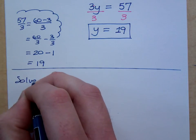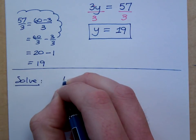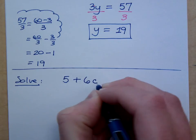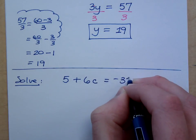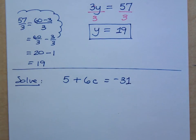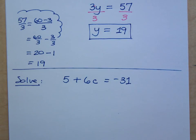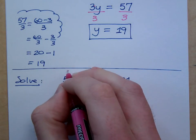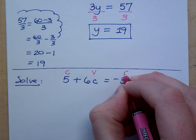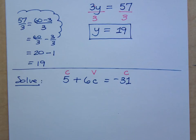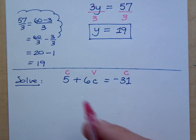How about 5 plus 6c equals negative 31. Now here, this is a constant term, this is a variable, this is a constant. Again, I only have one variable term, right? So since he's the only variable term, move the other stuff over. So how do I move this 5?